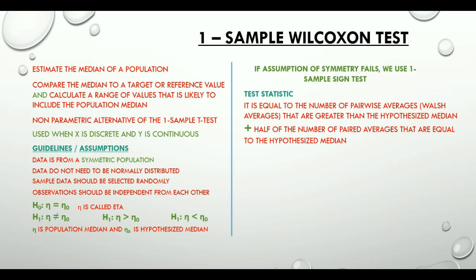For example, if we have two data points in our data set — 1 and 3 — this data set can have three pairs: one paired with itself, three paired with itself, and one paired with three. Each pair has an average, so the pairwise averages are 1, 2, and 3.